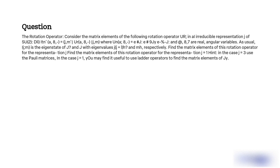The objective is to find the matrix elements of the rotation operator UR in the irreducible representation J of SU(2), specifically for the representation J equals 1, using the Pauli matrices and ladder operators to find the matrix elements of J.